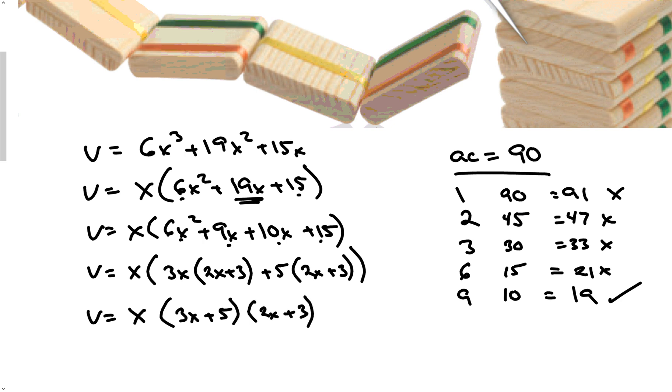And so my final expression is going to be x times 3x plus 5 times 2x plus 3. And since volume is length times width times height the possible dimensions are x, 3x plus 5, and 2x plus 3.